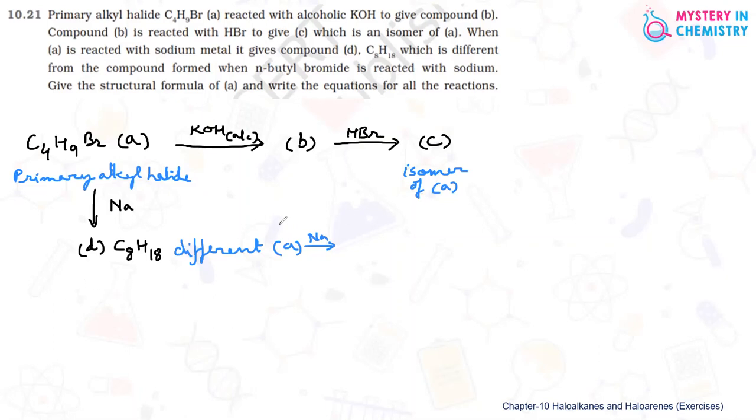Now we have to understand, reacted with sodium, give the structural formula of A and write the equations for all the reactions. So now one by one. A is primary alkyl halide. Now two primary alkyl halides are possible. One is normal butyl bromide. Second should be CH3-CH(CH3)-CH2-Br. This is also primary alkyl halide and it can be A compound.